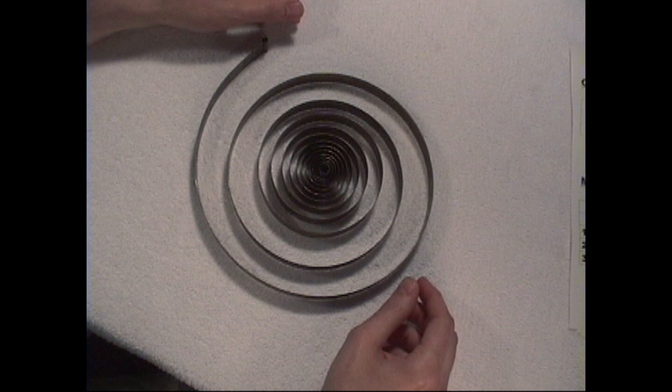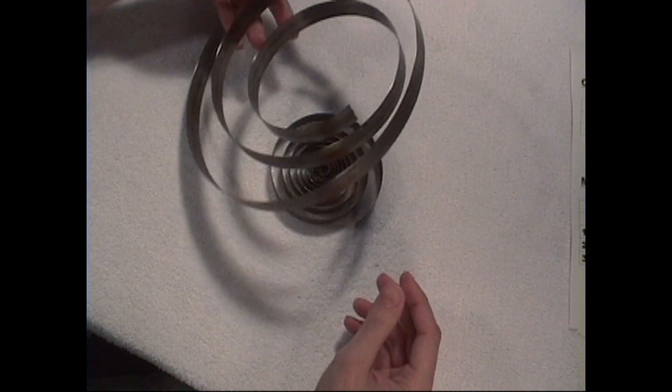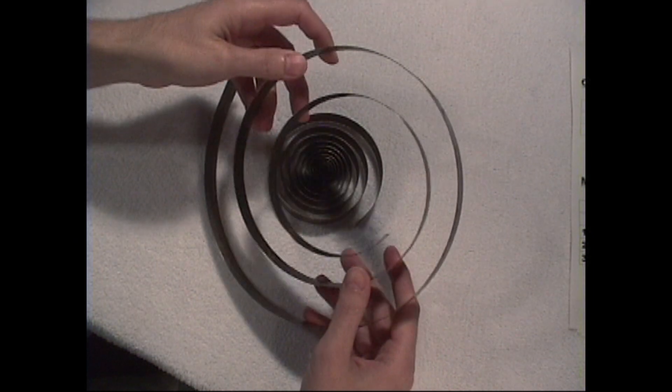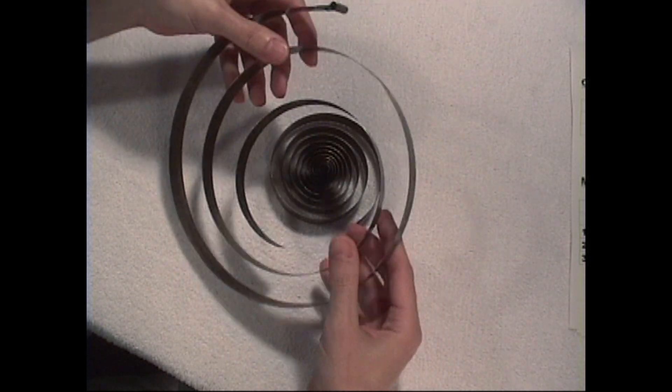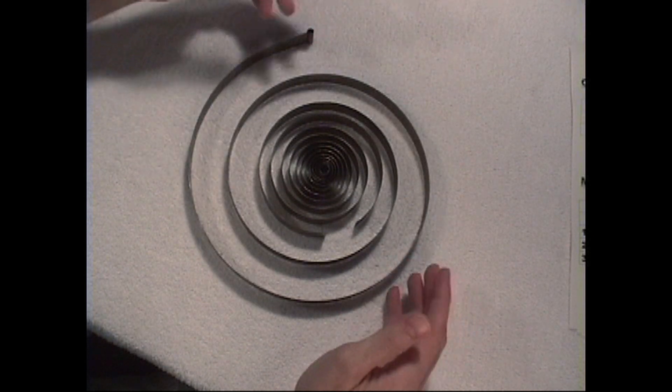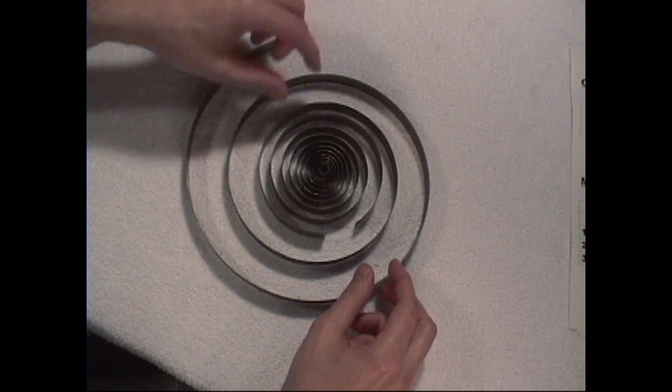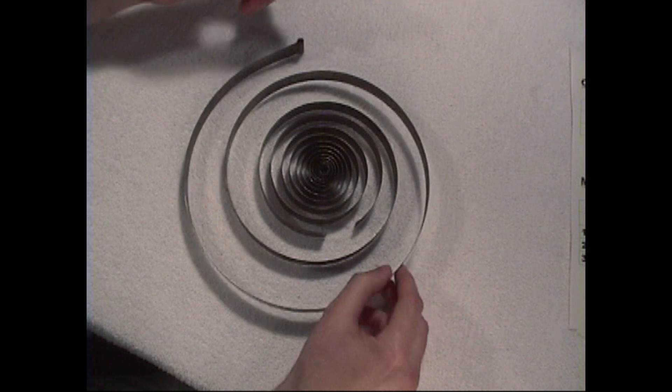Here we have a mainspring, and this is out of an eight-day movement. And as you can see, it has broken. It has broken probably after the first three feet of this spring, so there's nothing really that can be salvaged because it's broken pretty far into the spring and we're going to need to replace it.